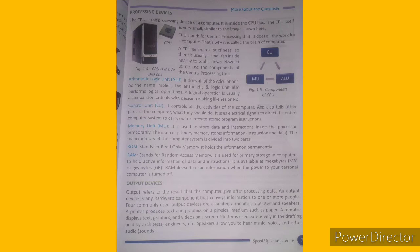Next is the processing device. The CPU is the processing unit of a computer. It is inside the CPU box. The CPU itself is very small, similar to the image shown. The CPU is called the brain of the computer. A CPU generates a lot of heat, so there is usually a small fan nearby to cool it down.